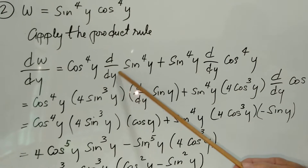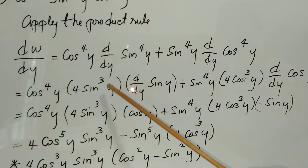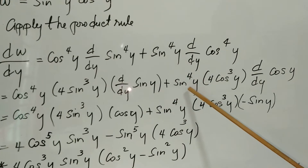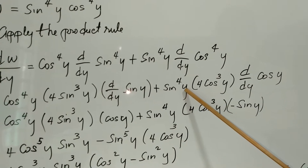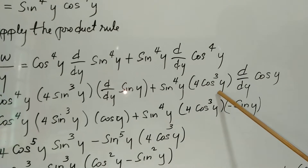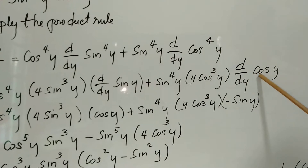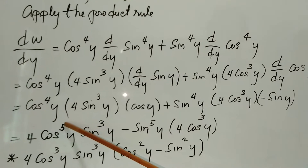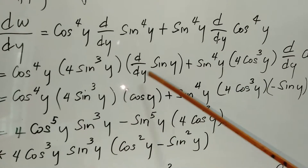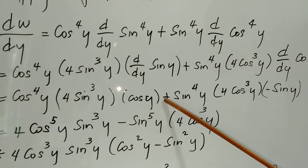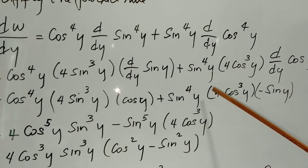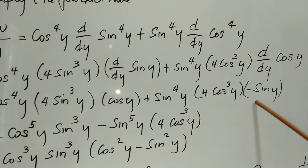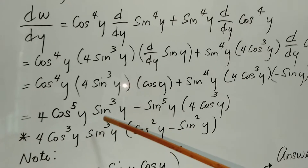Finding those derivatives: cosine to the fourth y times four sine cubed y times d over dy of sine y, plus sine to the fourth y times four cosine cubed y times d over dy of cosine y. Continuing: cosine to the fourth y times four sine cubed y times cosine y, plus sine to the fourth y times four cosine cubed y times negative sine y.